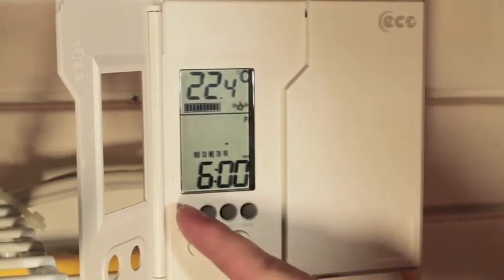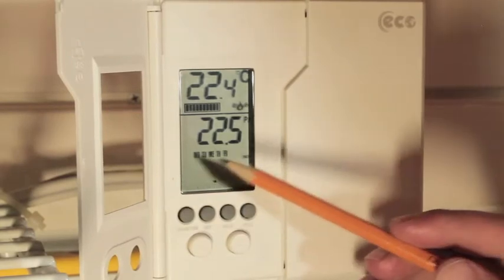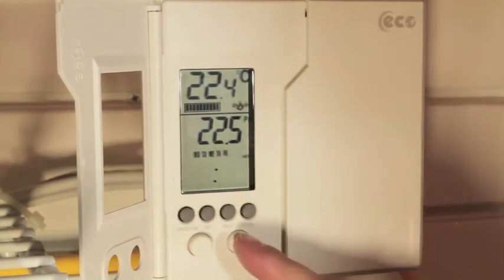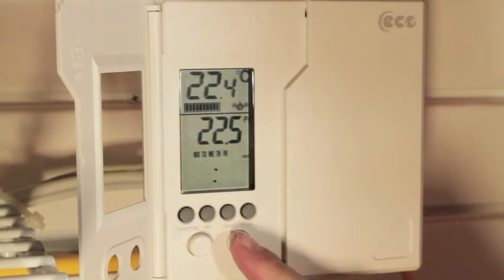To switch to adjusting the time, press the usage time button. The time will now flash. This can now be adjusted also by pressing the arrow buttons.